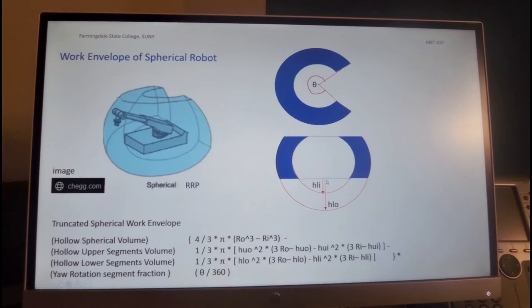So given some parameters, such as the height of the inner sphere, which is on the lower side, and the height of the outer sphere, which is being truncated on the lower side. And similarly, not shown, but we have the height of the upper truncated segment of the inner and the outer spheres. We have these parameters plus theta.